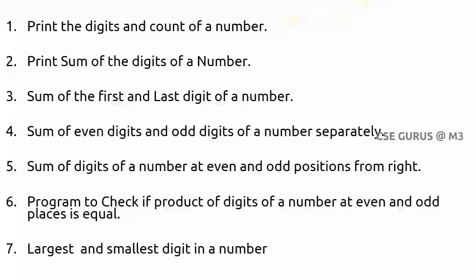Let us take an example where n is equals to 523. The digits in this number are 5, 2, and 3 — or 3, 2, and 5 depending on direction. I want to print those digits. The logic is: suppose I want to print from the right side, so how do I get the digit 3, which is in the one's position?